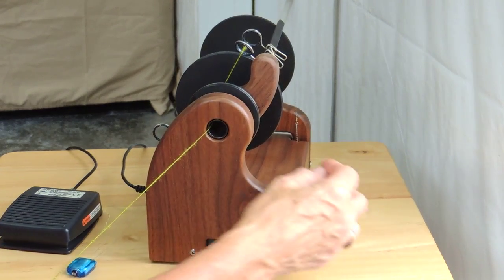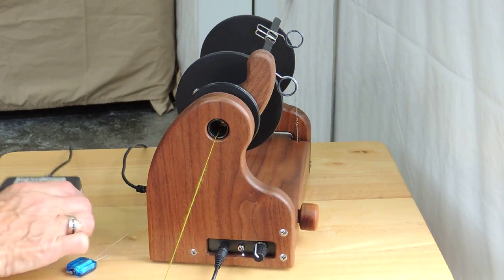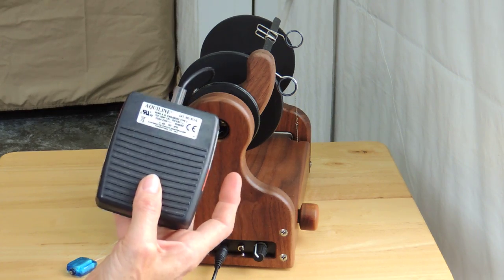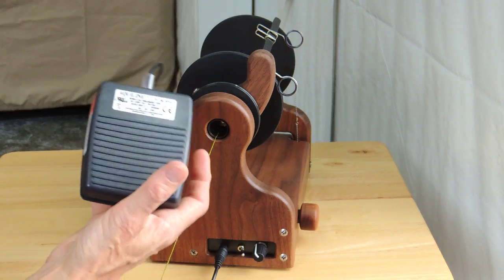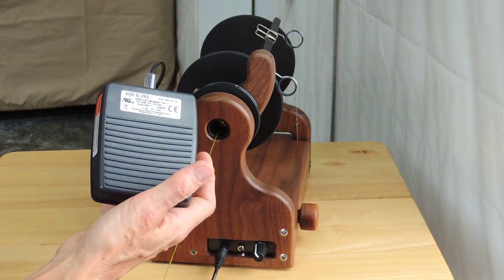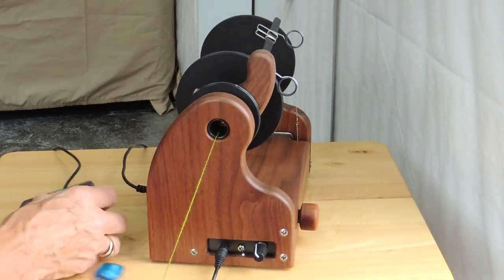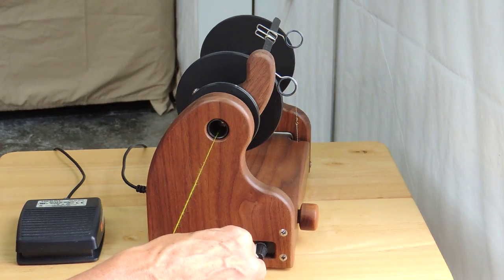The foot switch can also be used in dead man mode which means that when I'm holding it down the spinner would be working and when I let my pressure off it would stop and obviously you use that with your foot. And that's easily switched back and forth by the order in which you put your power cord input switch in.